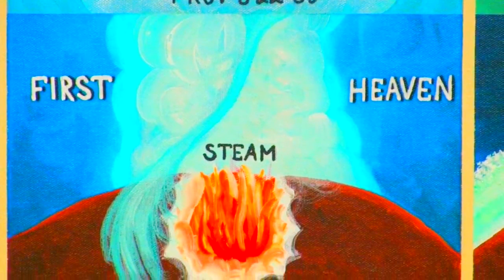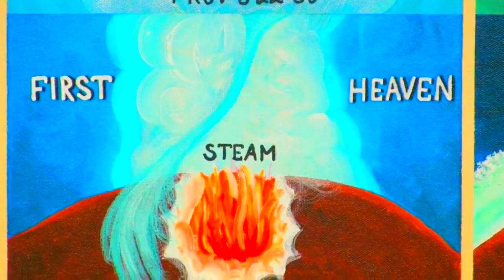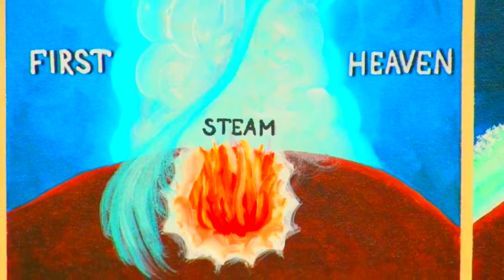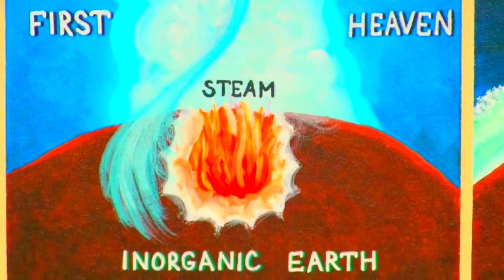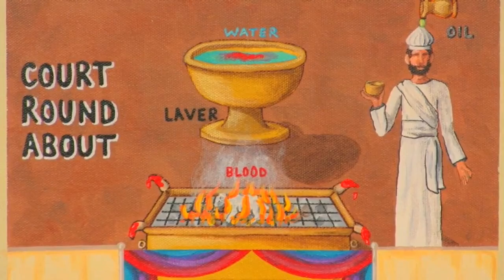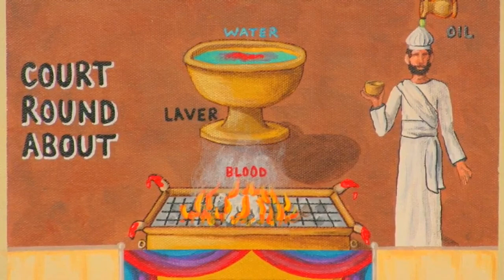The hot springs and steam in plate 4E, caused by the intense heat of the internal lava, and the clouds in the water surrounding the earth, are compared to the brazen laver in plate 1E, containing water for washing and cleansing purposes.